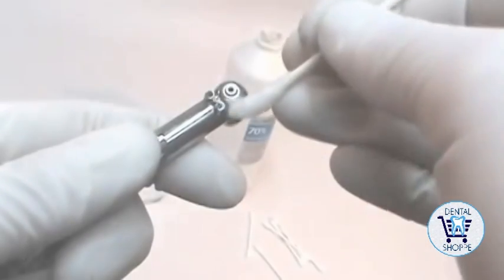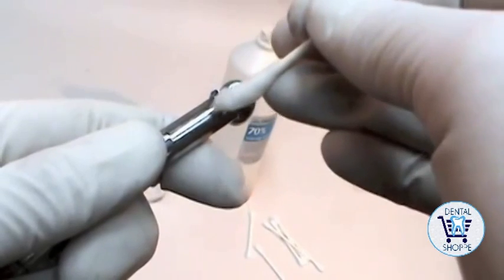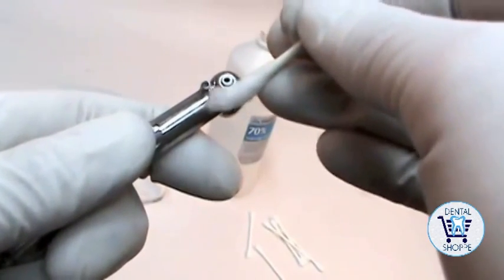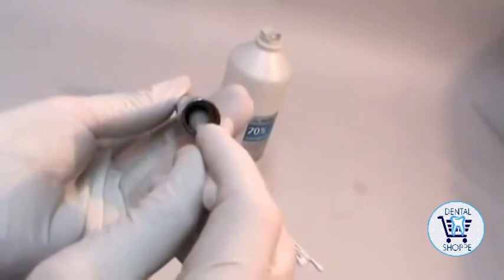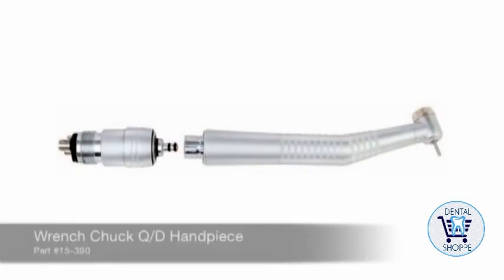Hand piece fiber optic surfaces can be cleaned using isopropyl alcohol or acetone on a cotton applicator. Don't pick the fiber optic ends with any type of sharp instrument. The quick disconnect connections and hand piece exterior can also be wiped down with isopropyl alcohol.